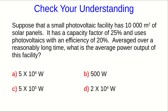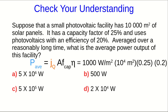The average power is going to be the flux density of the sunlight times the area of the photovoltaics, and then that further has to be multiplied by the capacity factor and the efficiency. So overall, that's 1,000 watts per square meter times 10 to the 4 meters squared times 25 percent and 20 percent, and that comes out to about 0.5 megawatts, which is a very small power generation facility.